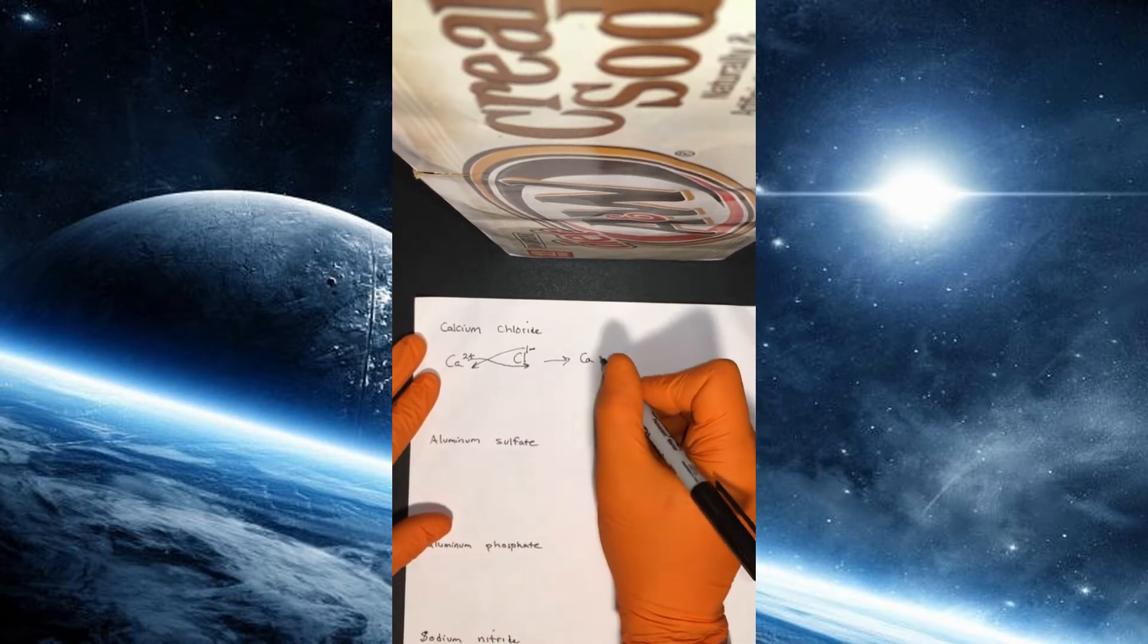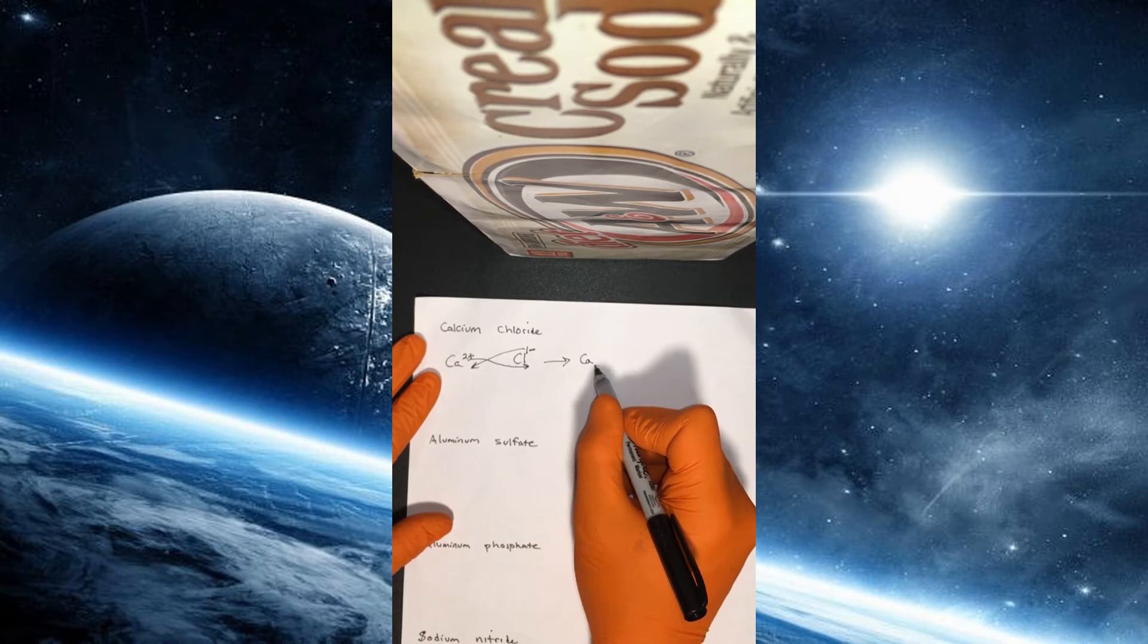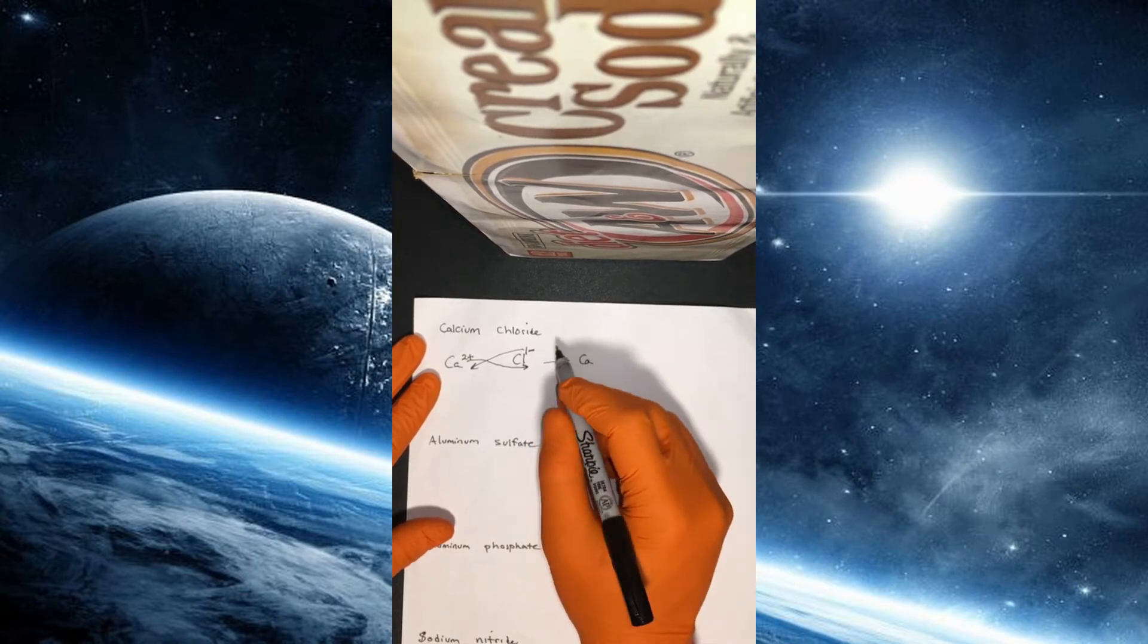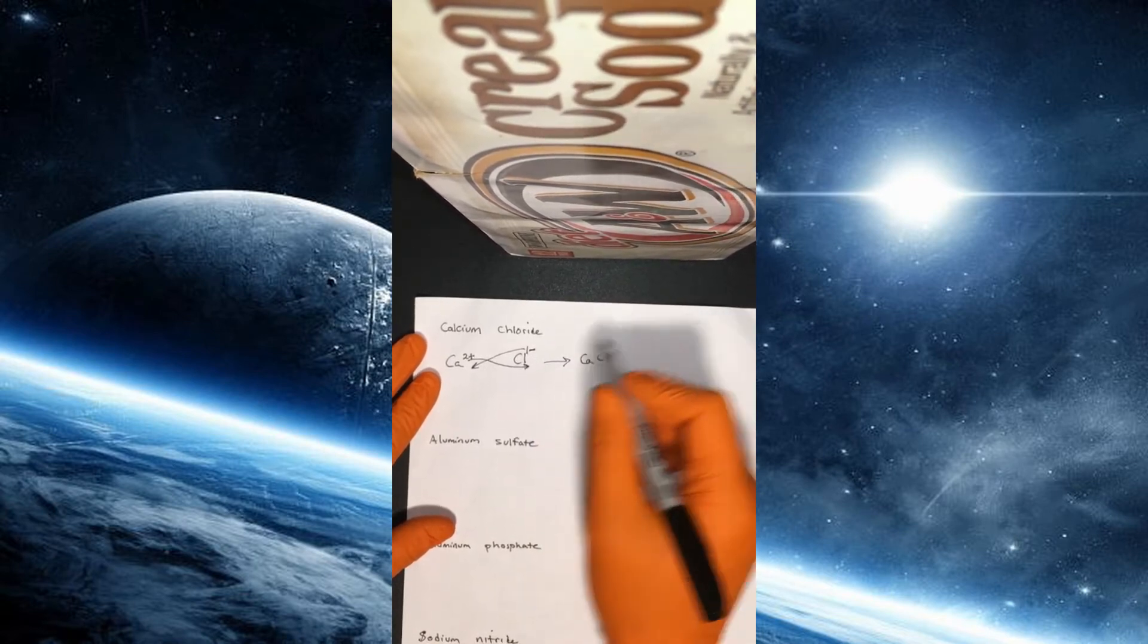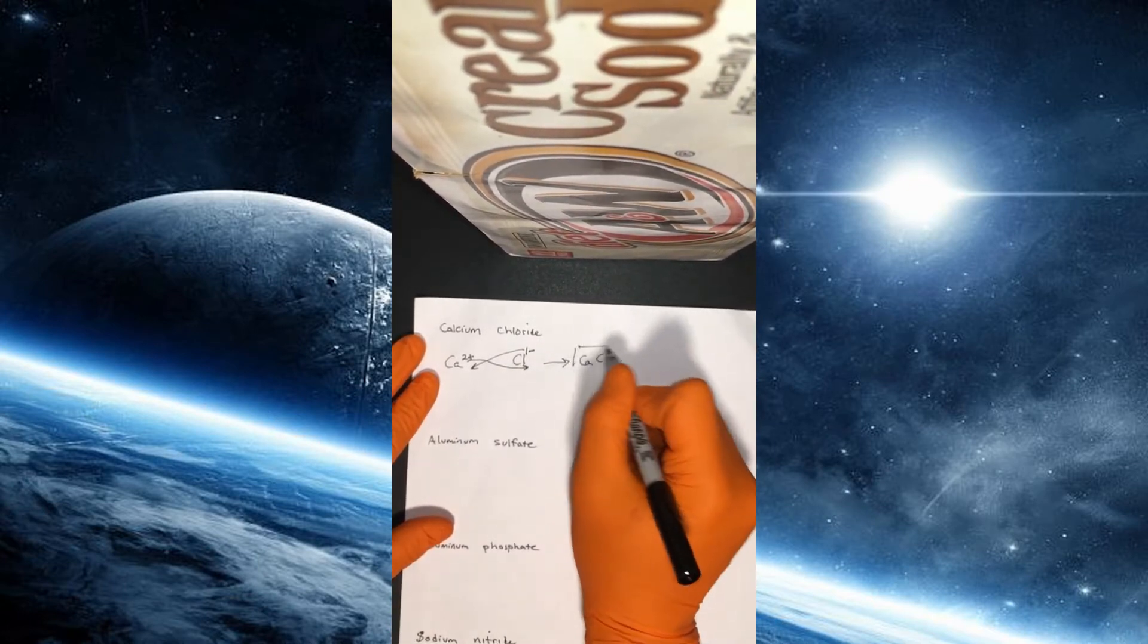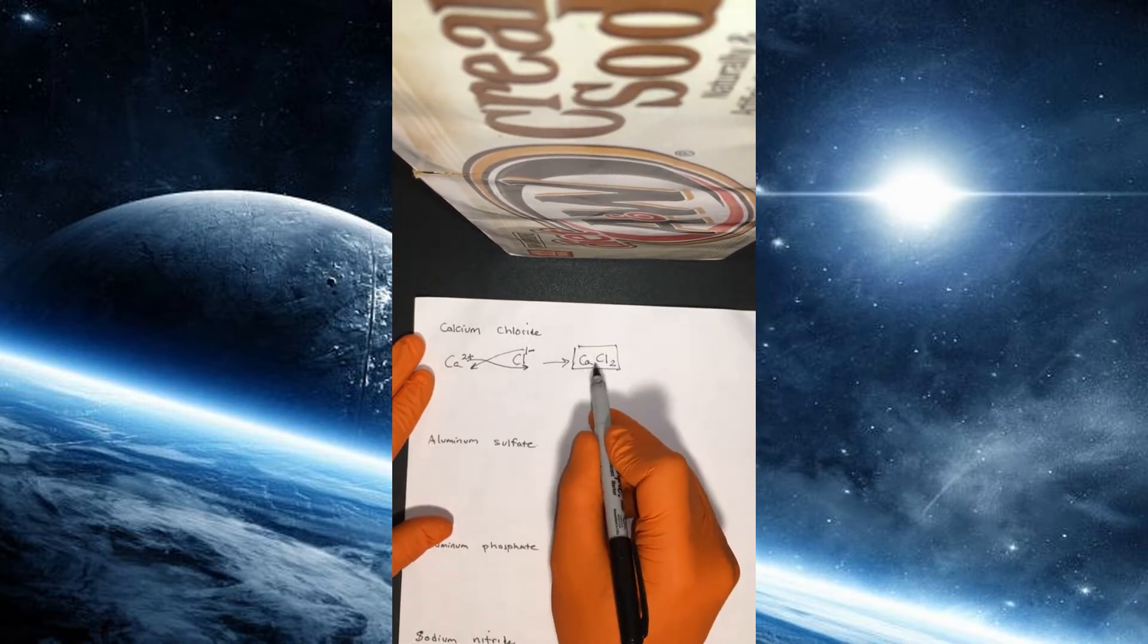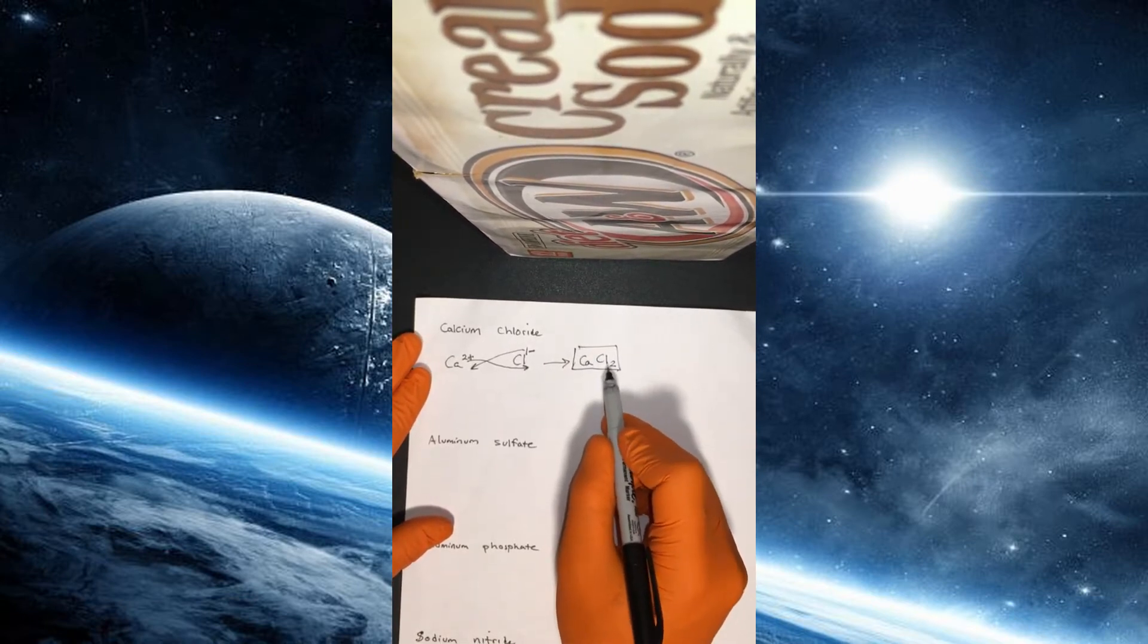And so when we write it, the Ca, the calcium will have a subscript of 1, which of course we don't write. 1 is understood. And the chloride will have a subscript of 2. And that 2 comes from the charge on the calcium. And so when we write this chemical formula, the compound is CaCl2. And that's our final answer.